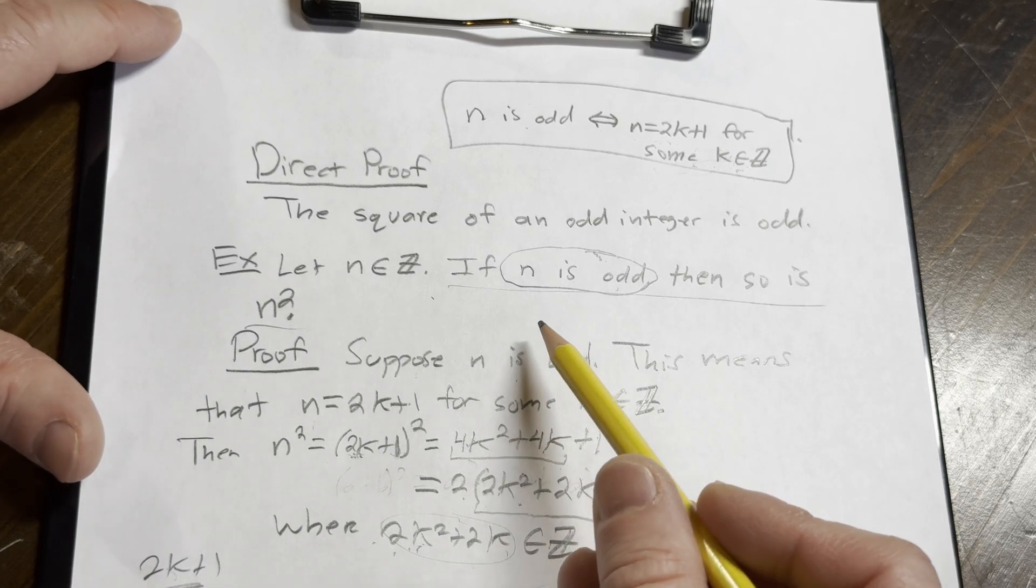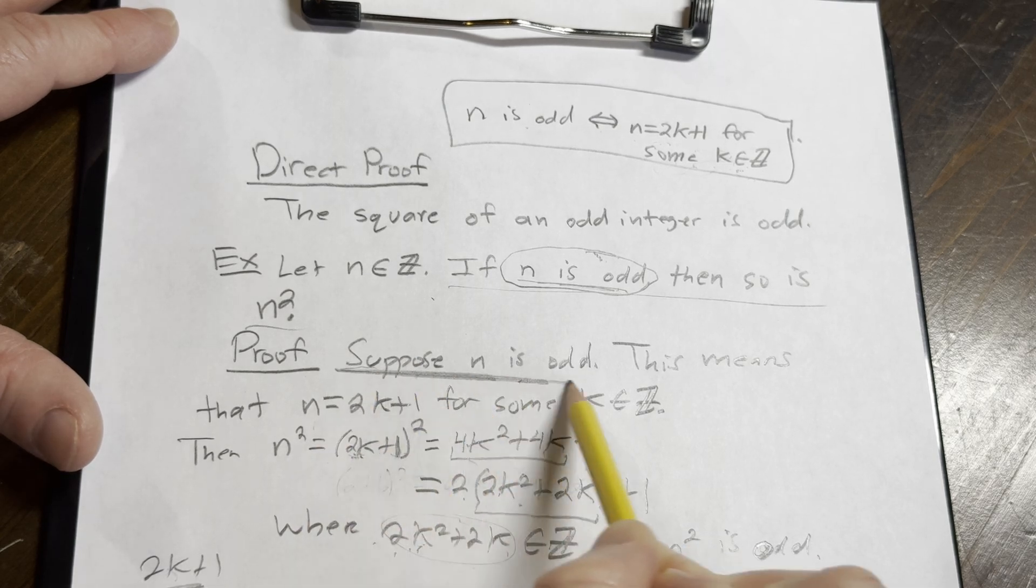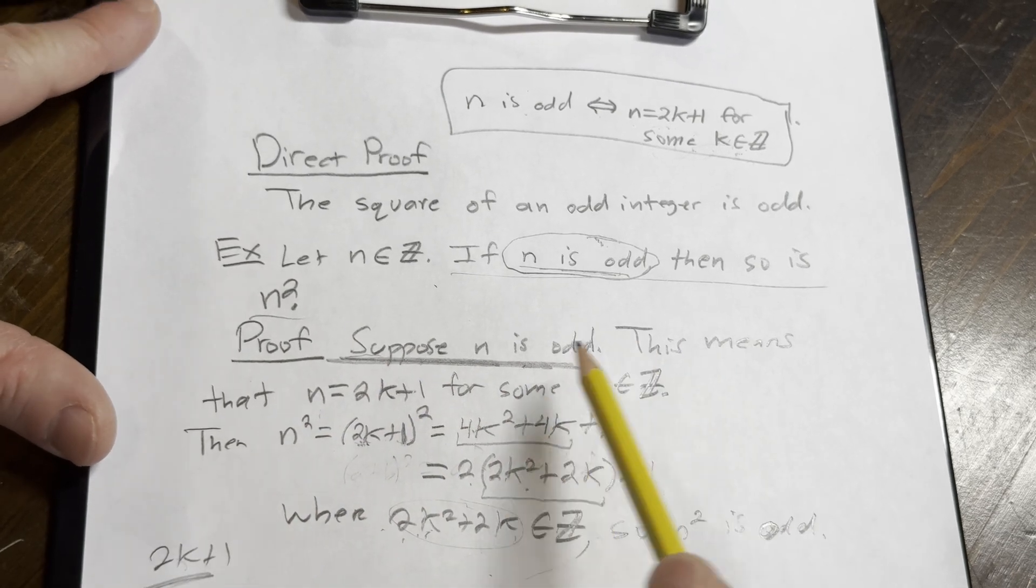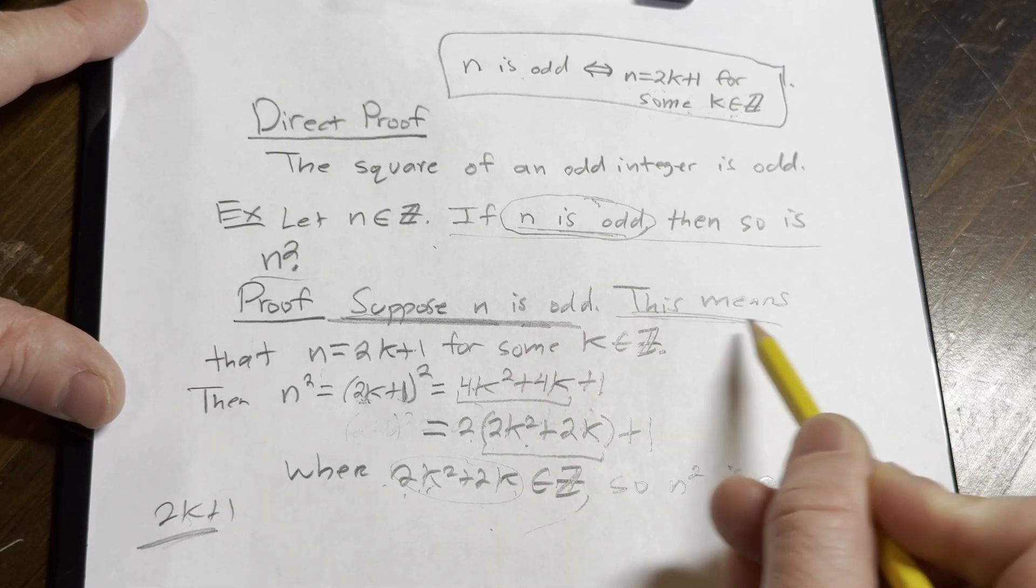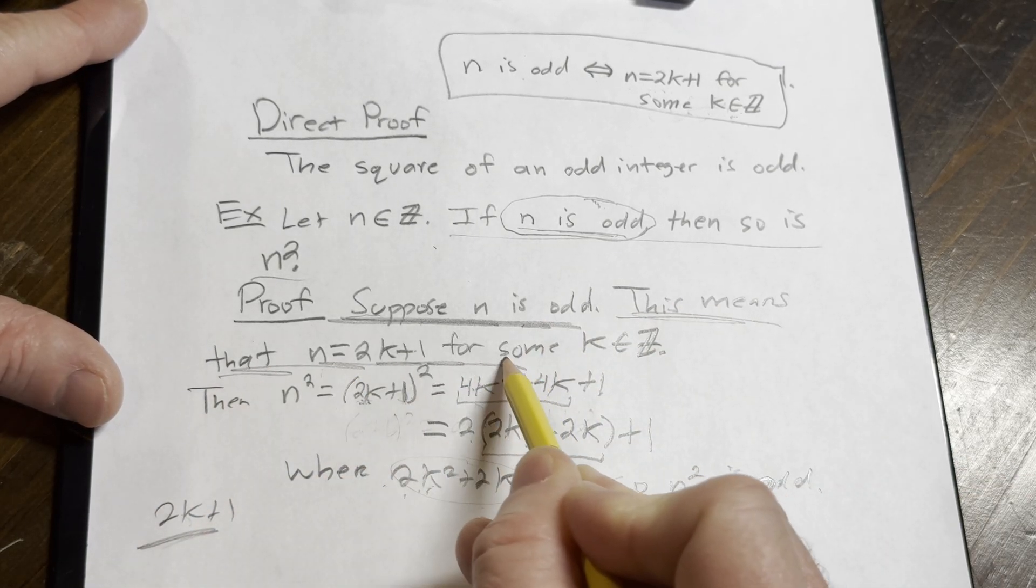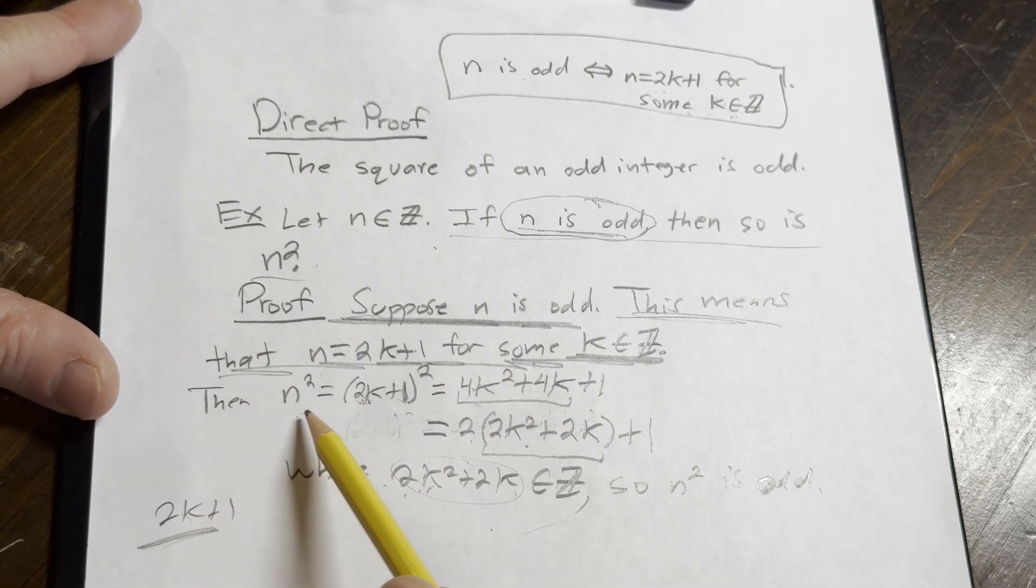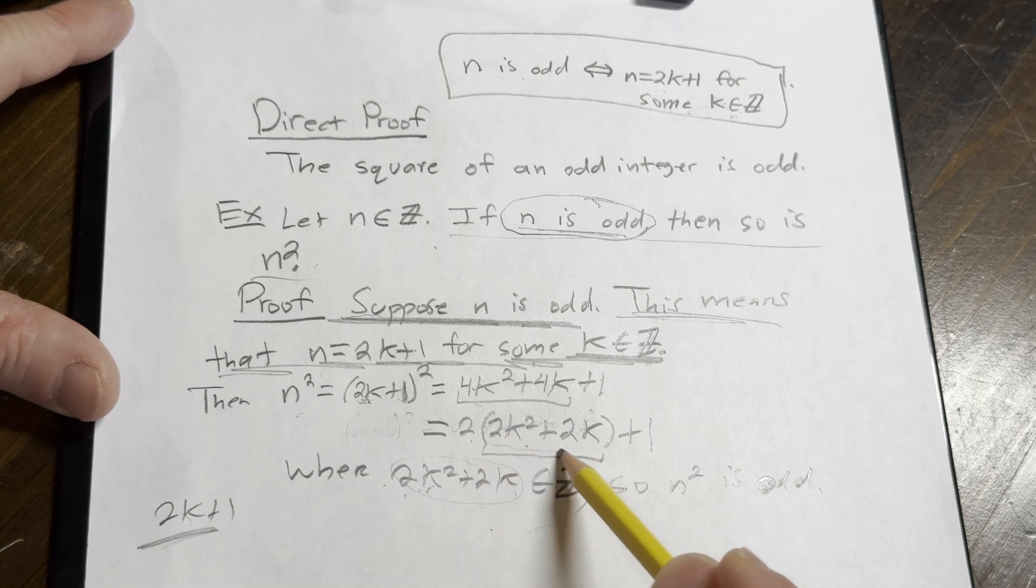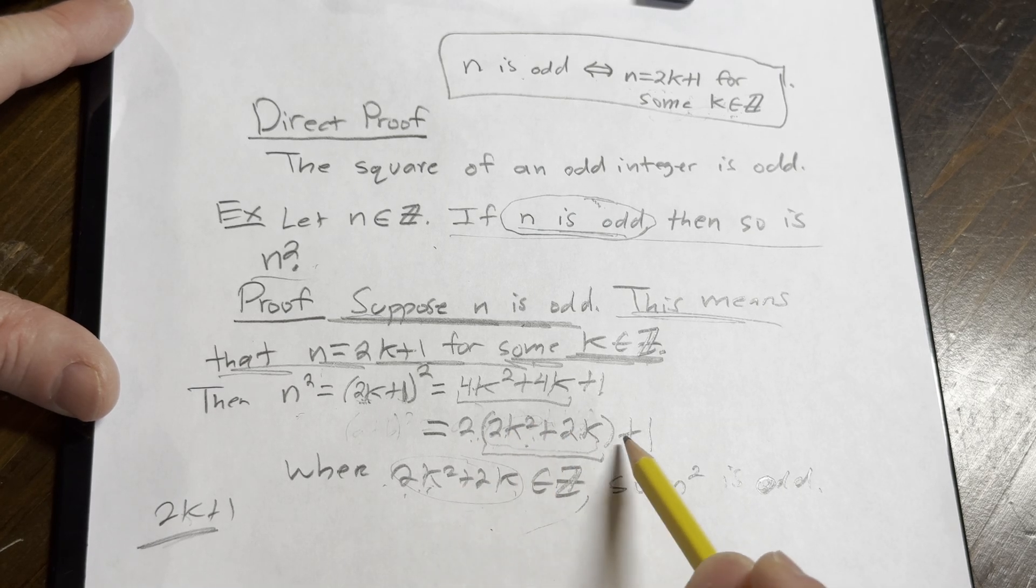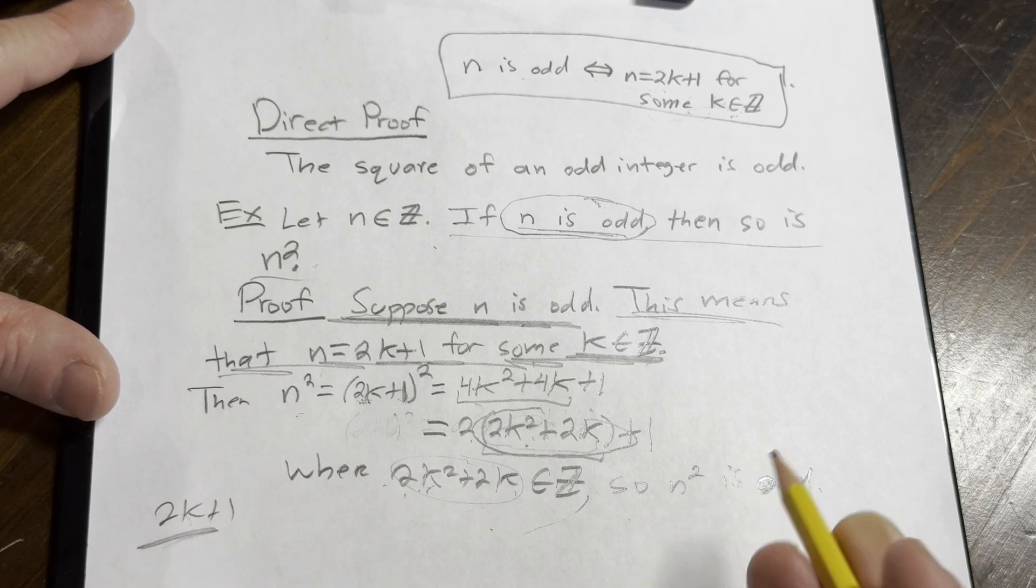So we started with, if this is true, we assume this, we wrote down what it meant for n to be odd. That's what this is here. And then we said, okay, we're trying to show n squared is odd. So we looked at n squared, we did some mathematics, we ended up here and then we just said that this is an integer. Because it's two times that where this thing here is an integer. So that's what it means for n squared is odd.